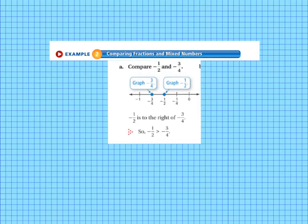Example 2a has us comparing negative 1 half and negative 3 fourths. So we're comparing those to see which one is larger. And this is where things get sometimes a little bit tricky for kiddos. So negative 1 half is to the right of negative 3 fourths. So everything to the right of 0 is positive and everything to the left of 0 is negative. So since negative 1 half is farther to the right, it is greater than negative 3 fourths.